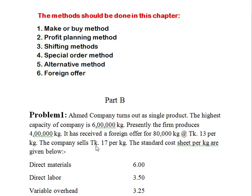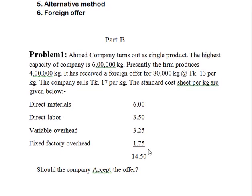The company's shares are usually 70,000 kg. The highest capacity of the company and the lowest capacity are given. We have 15,000 in fixed charges. The question is: Should the company accept the offer?